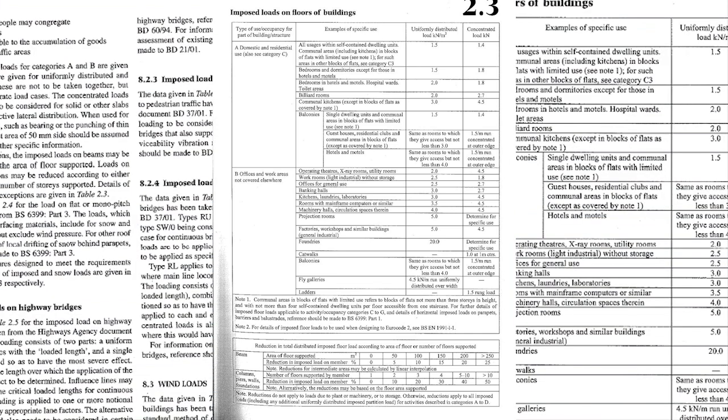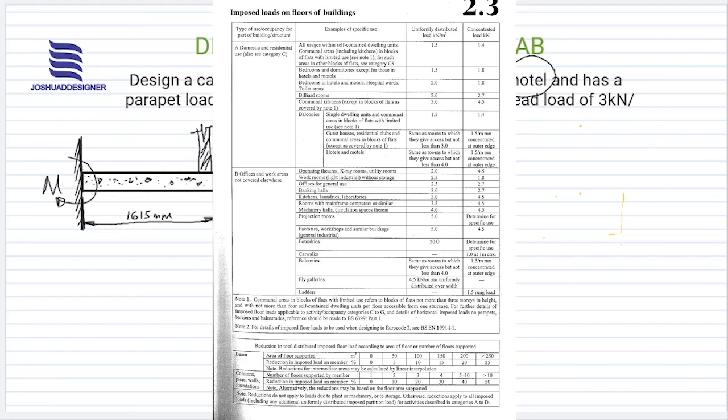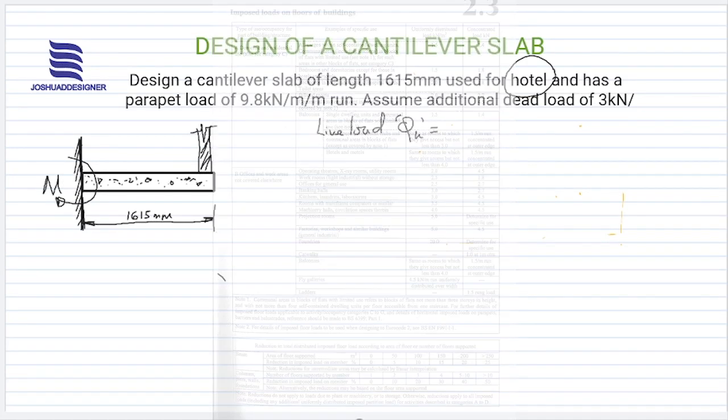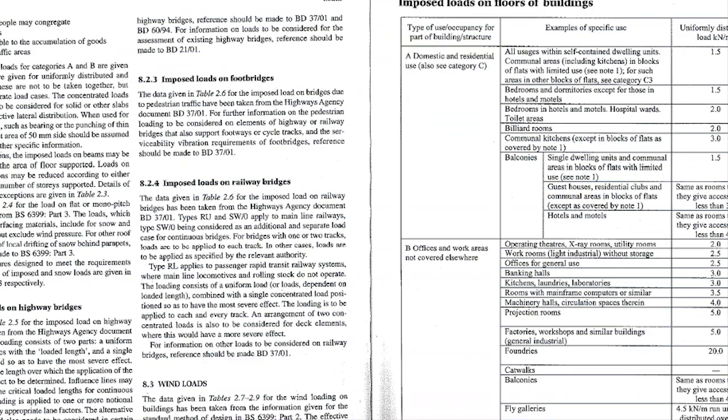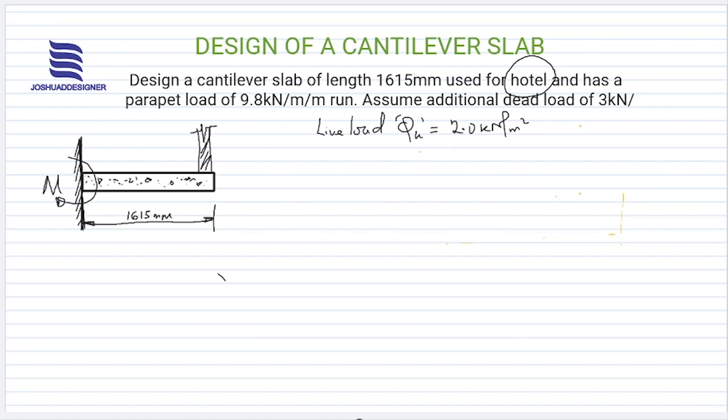For hotels, you'll find that we have 2.0 for the bedroom in hotels and motels, hospital wards, toilet areas for uniform distributed load. We have 2.0 for concentrated load, we have 1.8. What we need here is the uniformly distributed load, so we apply 2.0 kilonewtons per meter square.